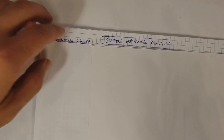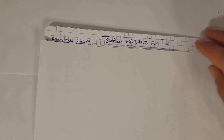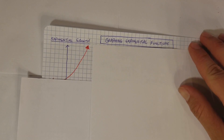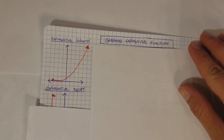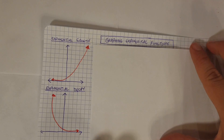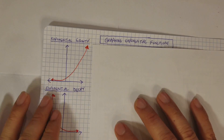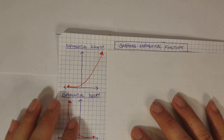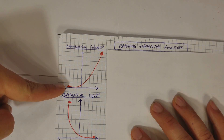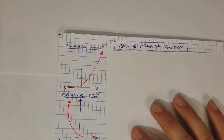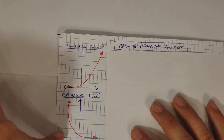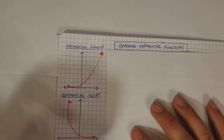We have two scenarios: exponential growth or exponential decay. With exponential growth, the graph is literally growing — it's going up, getting bigger. We're multiplying by a number every single time, so from left to right it goes upwards. Exponential decay would be going downwards.